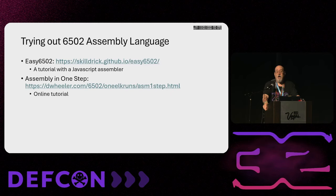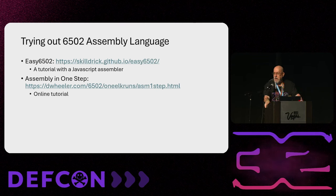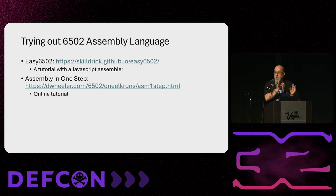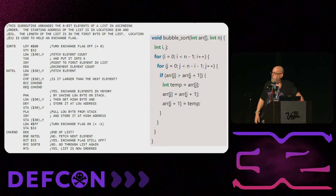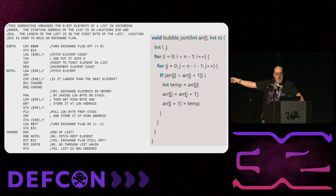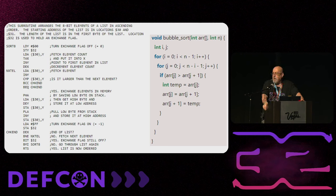If you'd like to try out 6502 assembly language, I found a really cool website that uses JavaScript — you can actually do assembly language programming right there as a tutorial where you can put in the code and see what happens. I also discovered another online tutorial. Feel free to take pictures of these. This is what assembly language looks like — the left side is assembly language to do a bubble sort, and then on the right side is bubble sort in C. That looks like really, really fun things to write — which is probably why I don't recall doing a whole lot of assembly language even in college.